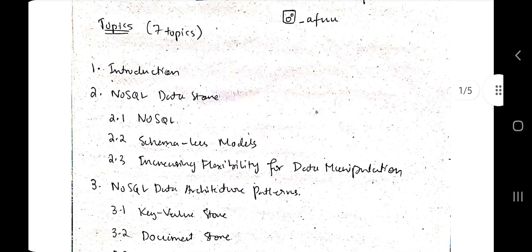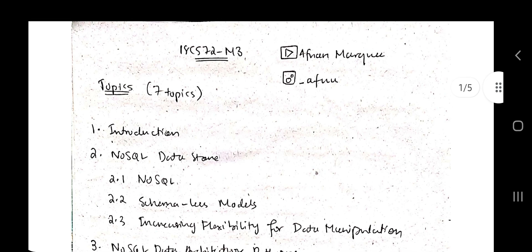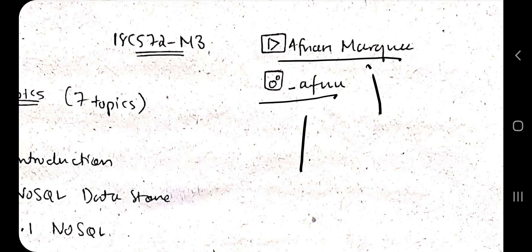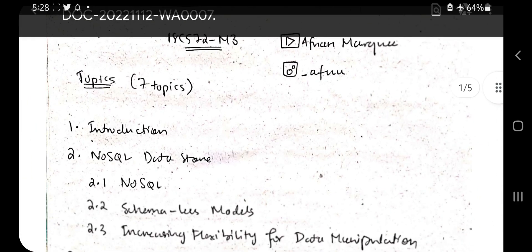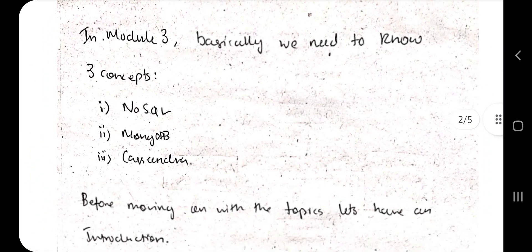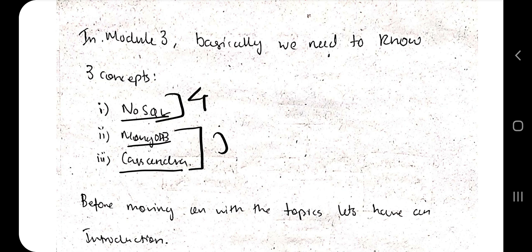Let me give a brief overview of what this module is about. There are totally seven topics. If we compress those seven topics, they sit under three main areas: NoSQL, MongoDB, and Cassandra — these are big data types and new data types for us. Out of the seven topics, four are related to NoSQL, two to MongoDB and Cassandra, and one is the introduction.